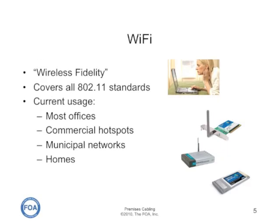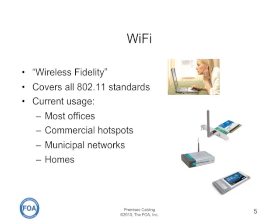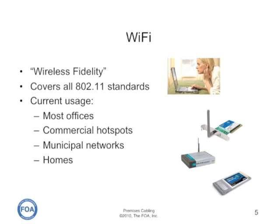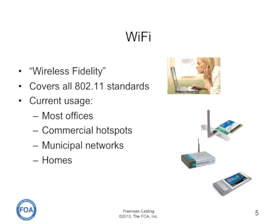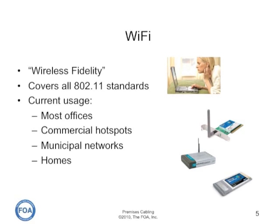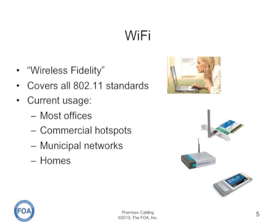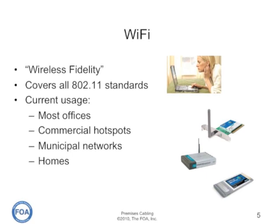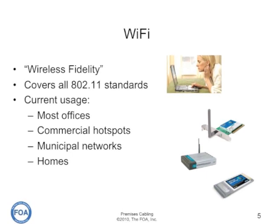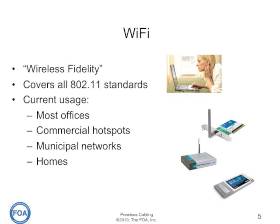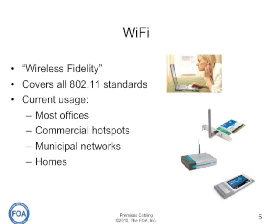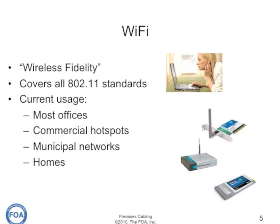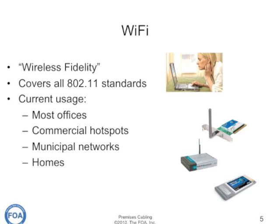When we're talking about wireless and premises networks, we're generally talking about Wi-Fi, the acronym used for a system called wireless fidelity that covers all 802.11 standards from the IEEE. Currently, Wi-Fi is used in most offices, commercial hotspots, municipal networks, and homes — anywhere mobile wireless connections are expected.